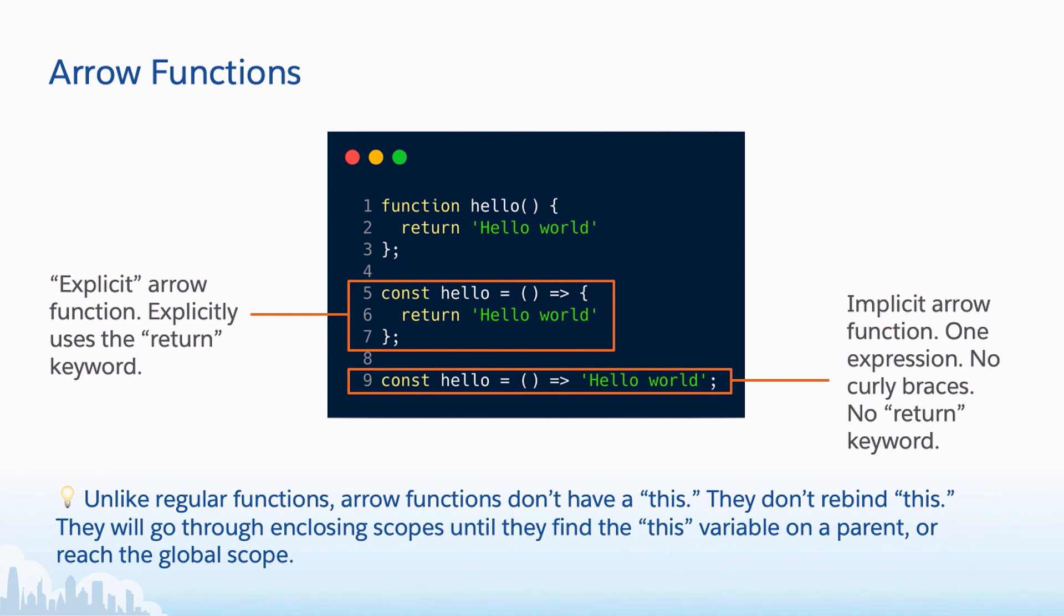So we're going to start simple here, talking about arrow functions. On line one, we're looking at just a normal function declaration in JavaScript. Okay, but on lines five and nine, we're using arrow functions. Those are identifiable by this fat arrow syntax. That's the equal sign in the side bracket that you see in each of them. And the difference between the two of them, the one on line five, that's using an explicit return, meaning we're explicitly using that return keyword. And we have curly braces to designate our code block. And then below that on line nine, we're doing an implicit return. It's implied that we're returning something here. And we get to drop the return keyword and those curly braces because we're just doing a single expression here.